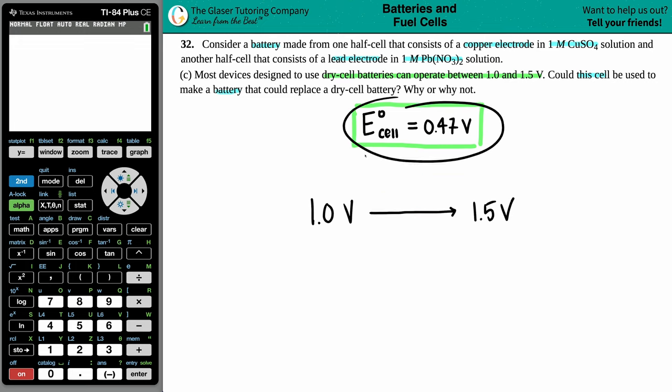Now, just having a single cell would not do the trick because the 0.47 volts is less than 1. But however, the great thing with batteries is that you can put them in series and you can have maybe two cells.